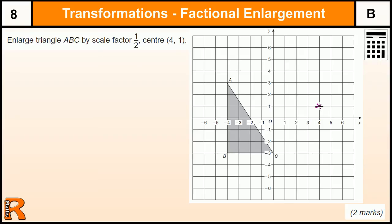If it's centered at (4,1), that means your construction lines come from (4,1) to these points on the triangle. We want to make it half as big, so we go half the distance from the center of enlargement to the point.